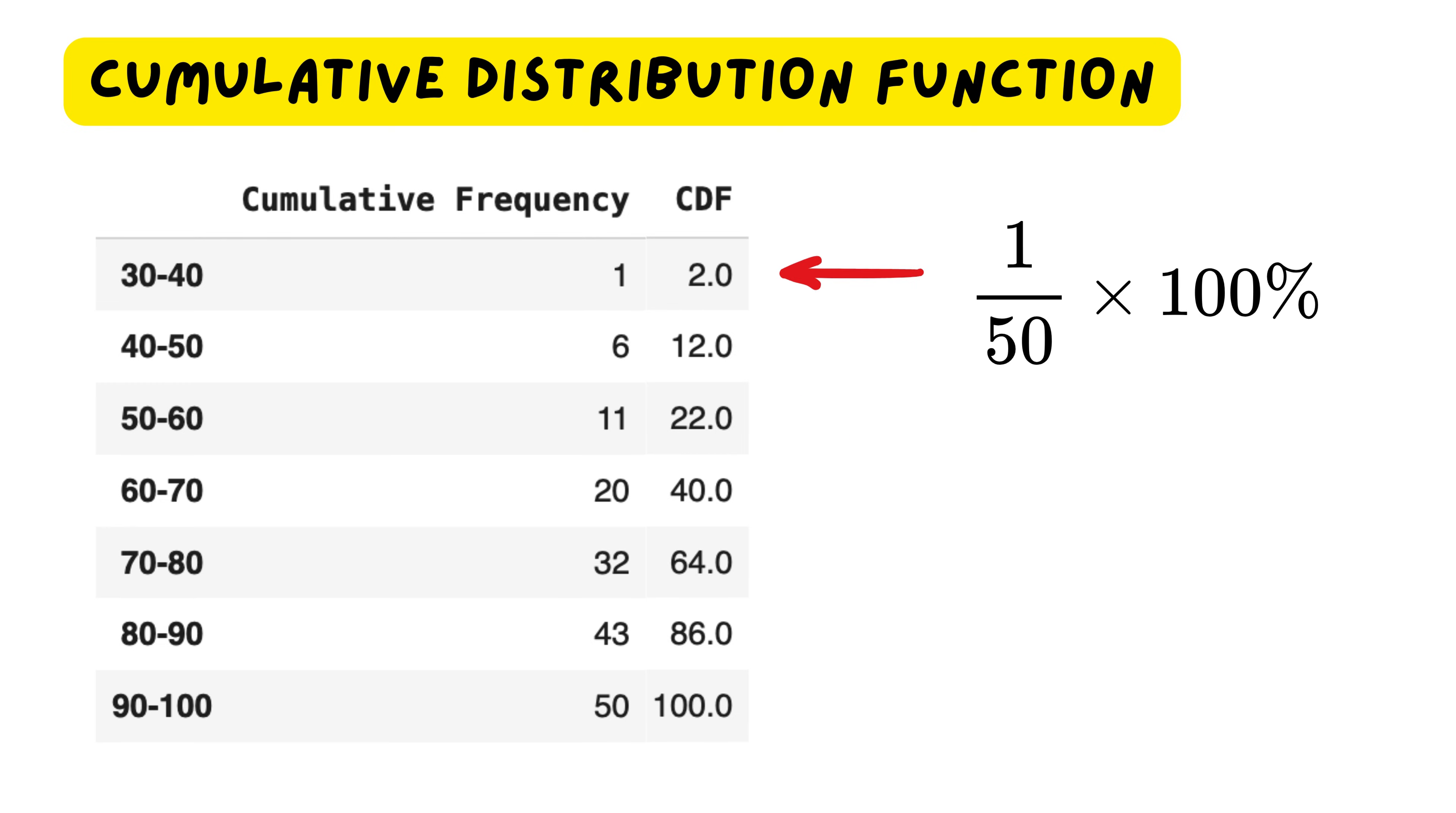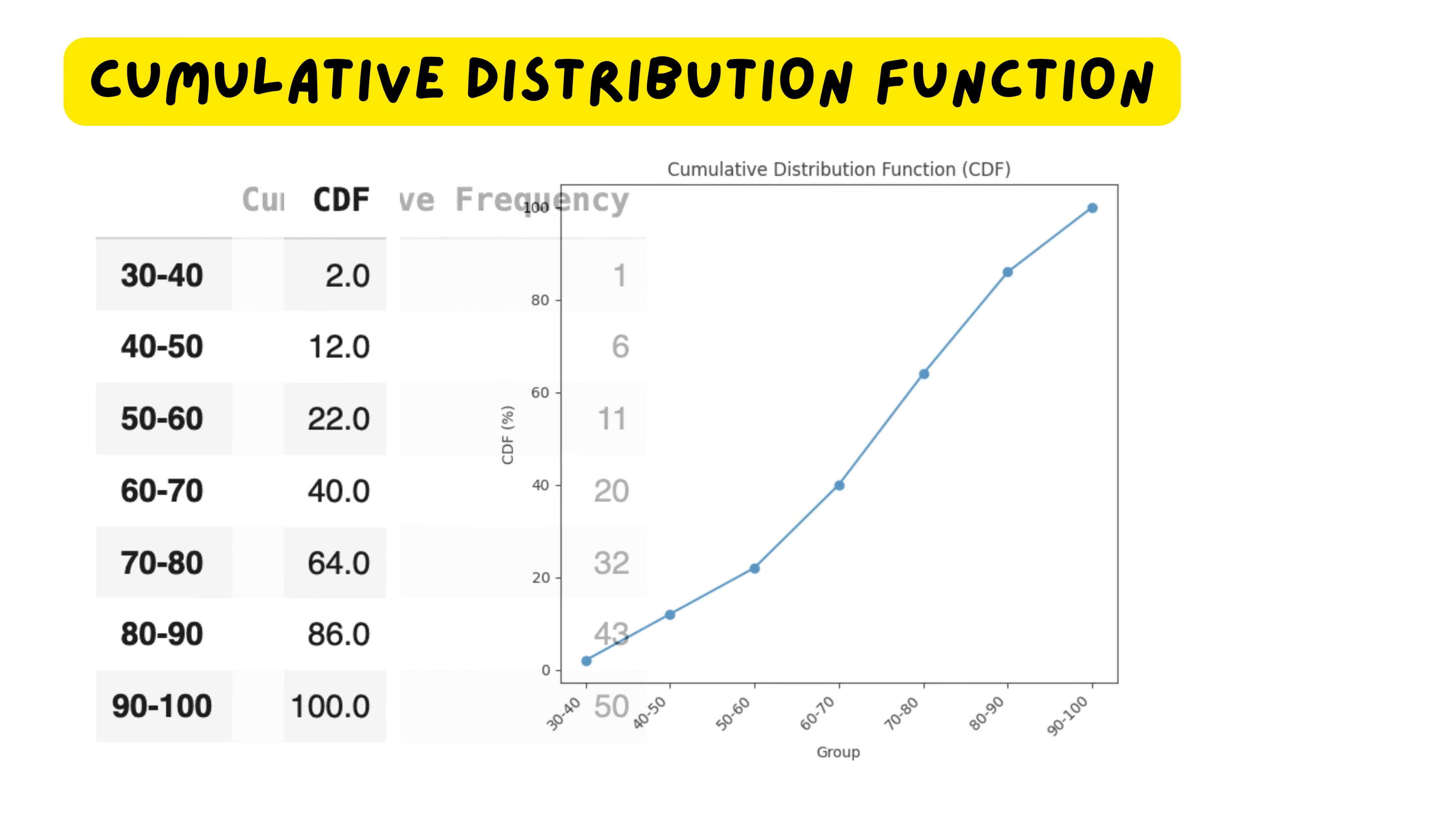For example, up to 40, we have one student out of 50, so the probability is 2%. Up to 50, we have 6 students, so the probability is 12%. Up to 60, it becomes 22%, and so on. Finally, up to 100, we get 100%, since all students have marks below or equal to 100. If we plot these probabilities on a graph, we get a smooth curve that starts at 0 and gradually rises to 100%. This curve is called the cumulative distribution function, and it tells us the probability that a randomly chosen student scored below a certain mark.